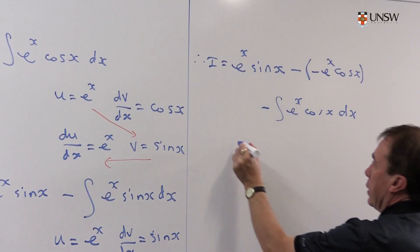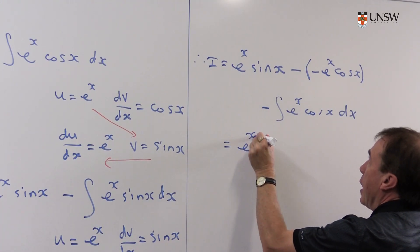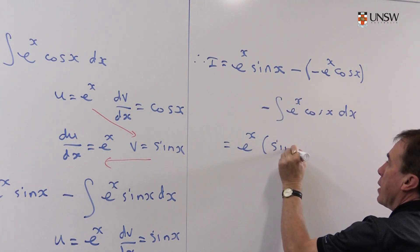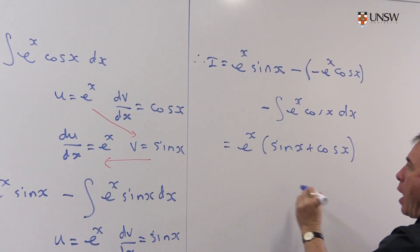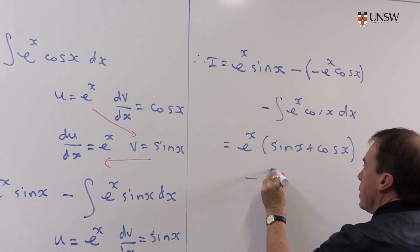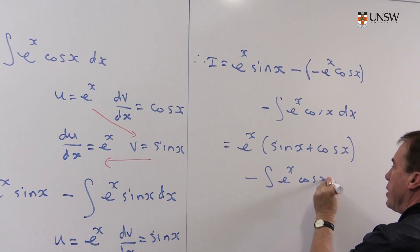Well, we'll tidy up just a little bit. So this is e to the x. Might factor out here, I think. So I get sine x plus cos x. And this is minus the integral of e to the x cos x dx.